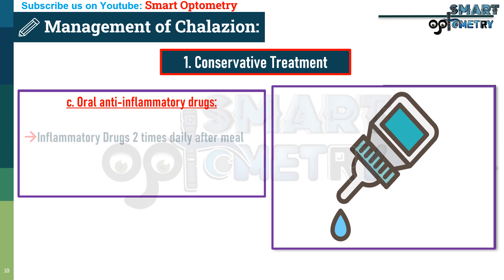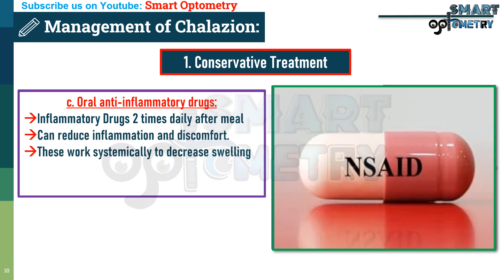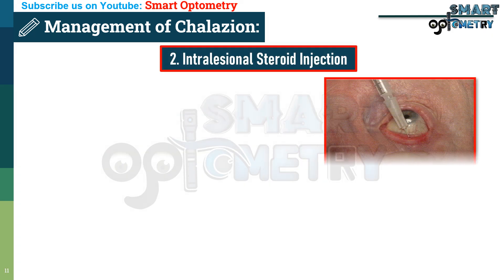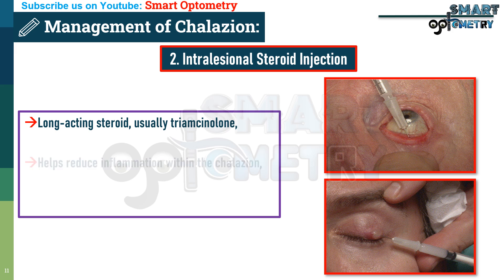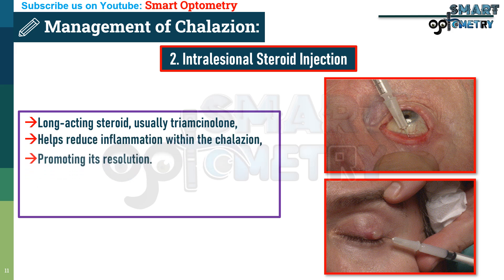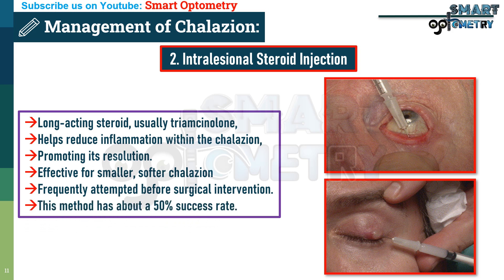Oral anti-inflammatory drugs like ibuprofen or naproxen, two times daily after meals, can reduce inflammation and discomfort. These medications work systemically to decrease swelling and support the natural healing process. Intralesional steroid injection: the injection of a long-acting steroid, usually triamcinolone, helps reduce inflammation within the chalazion, promoting its resolution. This method is often effective for smaller, softer chalazia and is frequently attempted before surgical intervention. This method has about a 50% success rate.